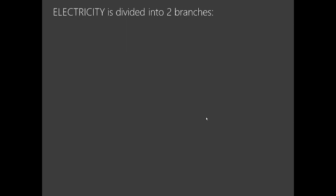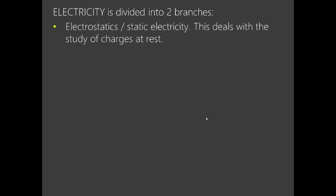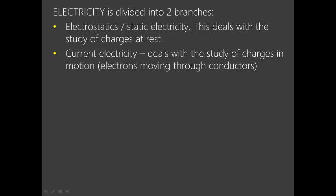We know very well that electricity is divided into two branches. We have electrostatics, or what we call static electricity, which deals with the study of charges at rest — the word 'static' means the charges are at rest. We also have current electricity, which deals with the study of charges in motion, and the moving charges are always the electrons that move through conductors.